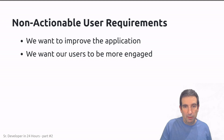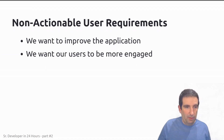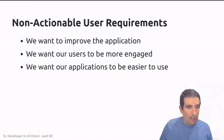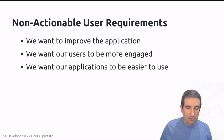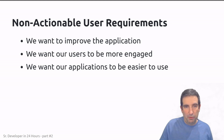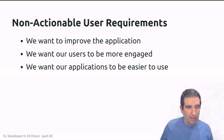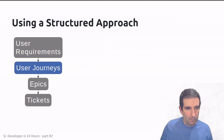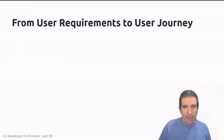We're going to go into detail through the other steps of this approach to make these things more concrete — for example, 'we want our application to be easier to use.' In the next step we're going to take things like this, lay them down piece by piece, break them apart, and have something we can work off. To do this, we're going to take our user requirements and turn them into user journeys.